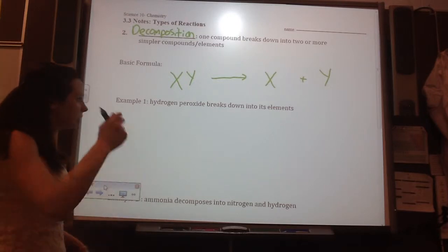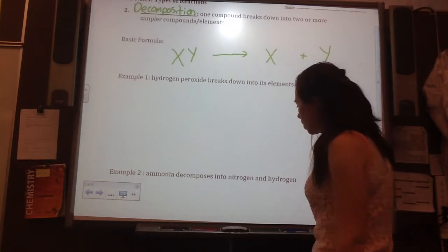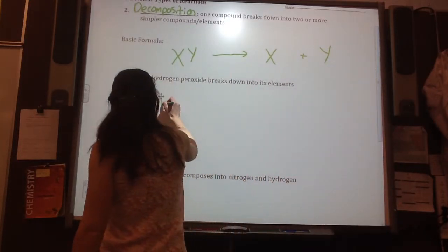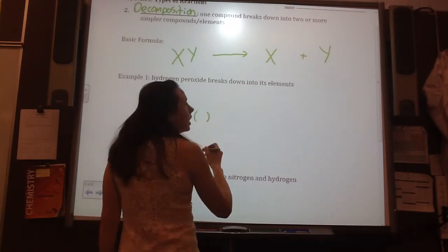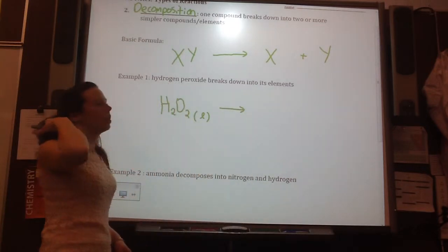So, let's try some examples then. Say we have hydrogen peroxide, that's one of our memory ones. And what state is it in? Liquid. It breaks down into its elements.